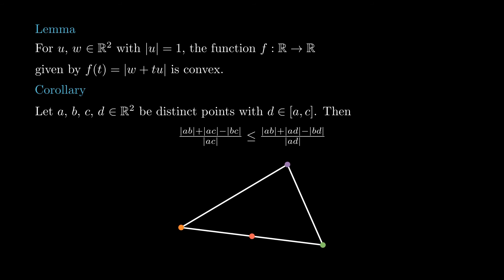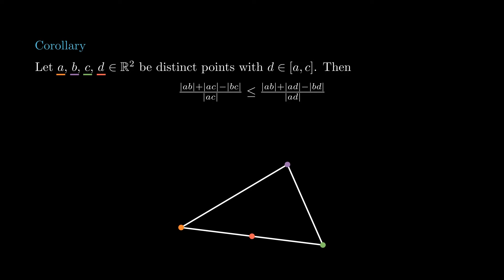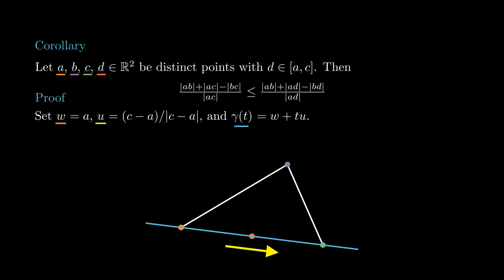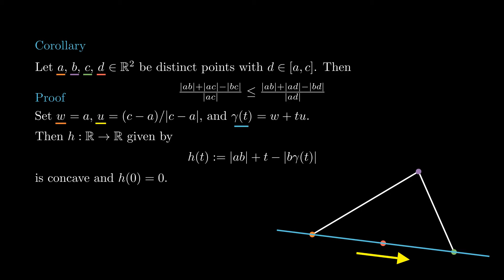This lemma has an important geometric corollary. If we have four points a, b, c, and d in the plane such that d lies between a and c, then (ab + ac − bc)/ac is less than or equal to (ab + ad − bd)/ad. To obtain the corollary, we take u the unit vector from a to c, gamma(t) the line passing through a in the direction u, and h the function ab + t minus the distance b to gamma(t). By the previous lemma, this function is concave, that is h'' is non-positive. Also notice that h(0) is 0, because gamma(0) is a. Then by concavity, h(ad)/ad is greater than or equal to h(ac)/ac, which is exactly what we wanted to show.